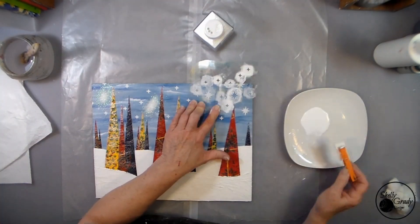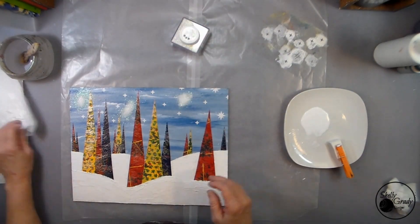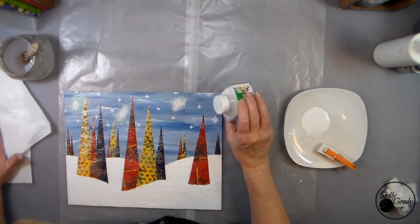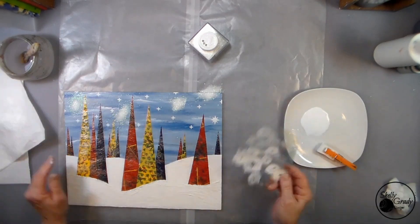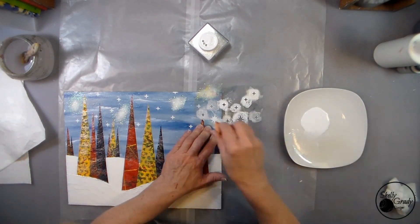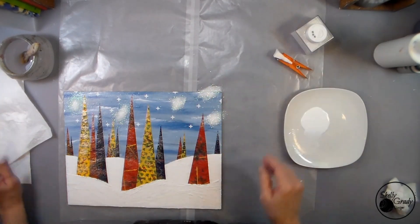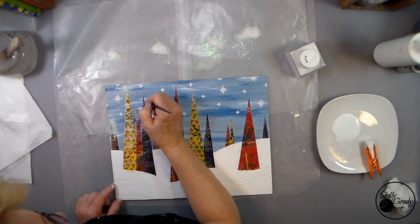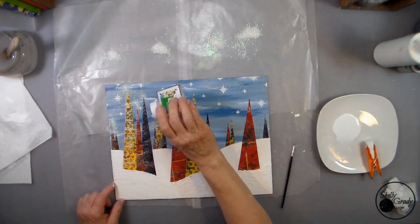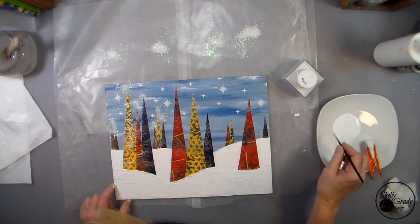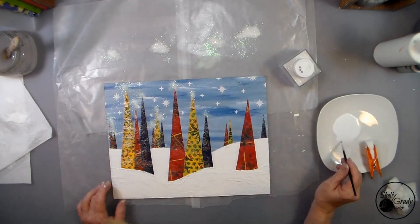Now I'm using a little bit of Mod Podge out on my palette, and I'm dabbing on a little Mod Podge on my bigger stars and then using a little bit of translucent glitter on top. And then I'm adding a little bit to the tops of my trees with my liner brush.